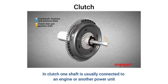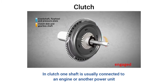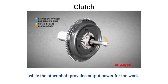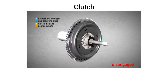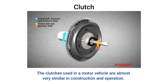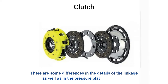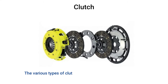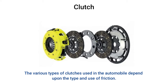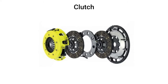In a clutch, one shaft is usually connected to an engine or another power unit while the other shaft provides output power for work. The clutches used in a motor vehicle are almost very similar in construction and operation, with some differences in the details of the linkage as well as in the pressure plate assemblies. The various types of clutches used in automobiles depend upon the type and use of friction.